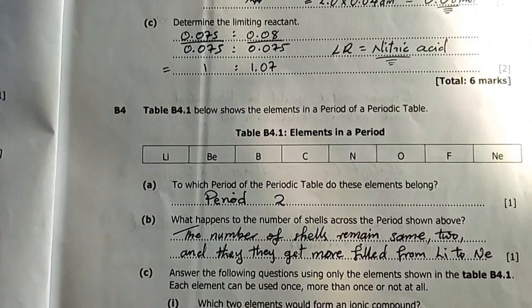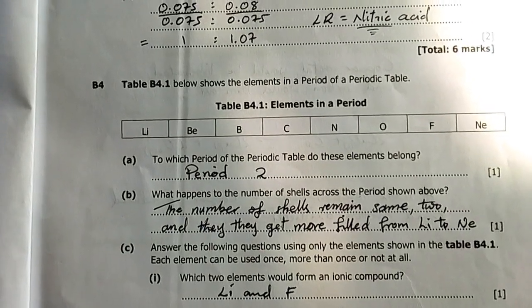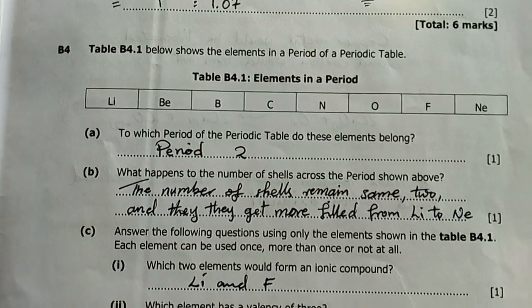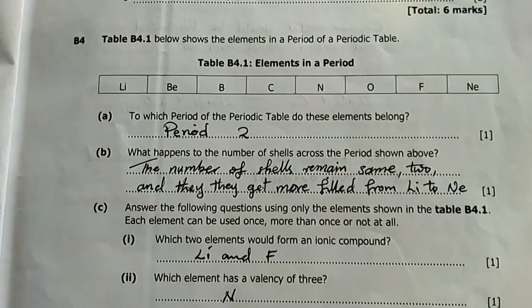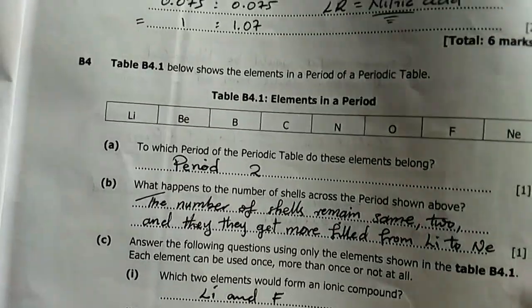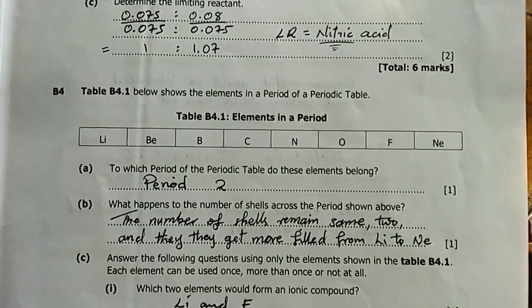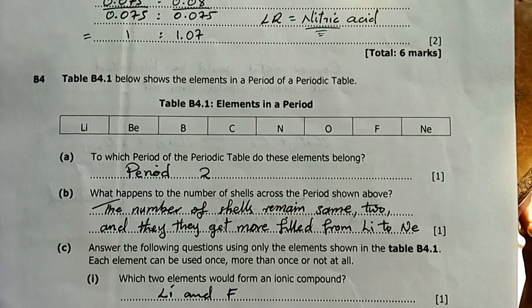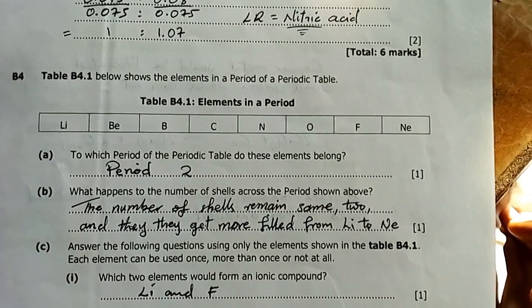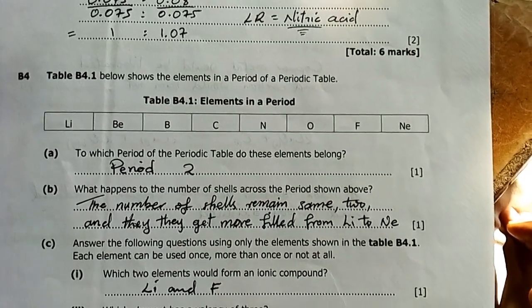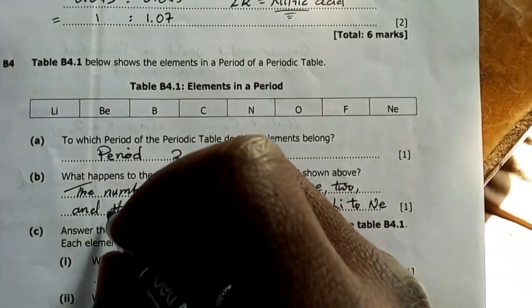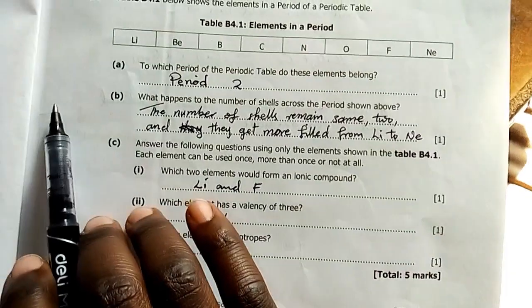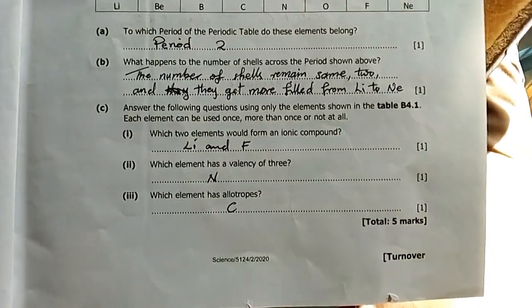Question B4: Below are elements in the periodic table—lithium, beryllium, boron, carbon, nitrogen, oxygen, fluorine, and neon. To which period do these elements belong? Period 2, because they all have two electron shells. The period number is determined by the number of shells. Question B: What happens to the number of shells across the period? The number of shells remains the same, and they get more filled from lithium to neon.